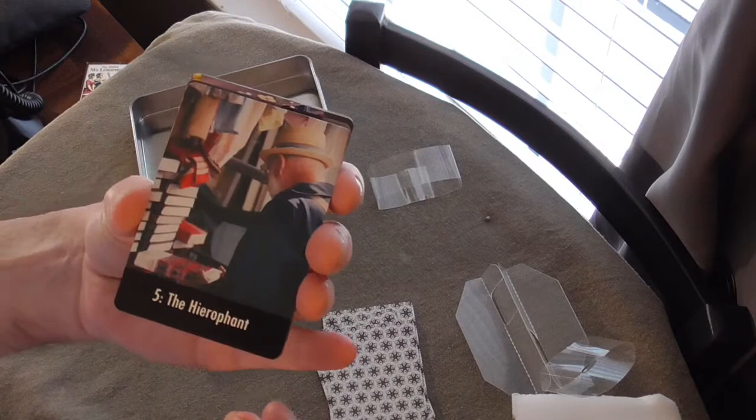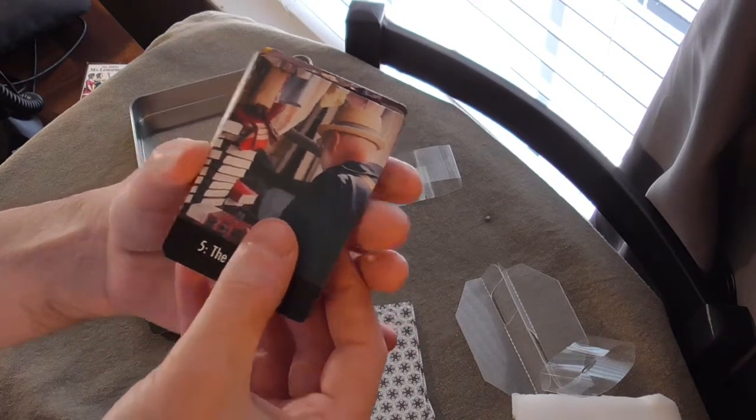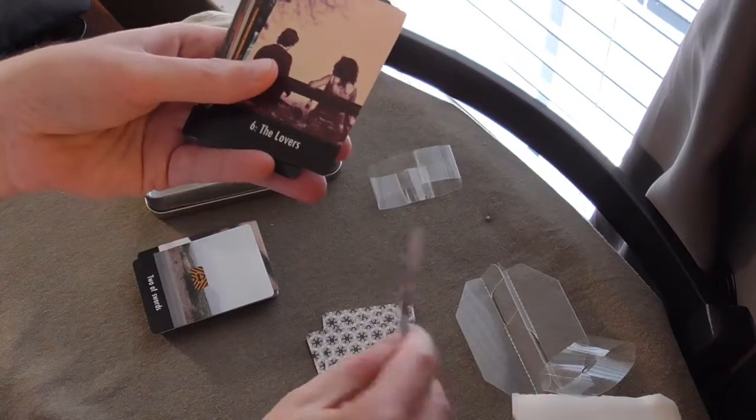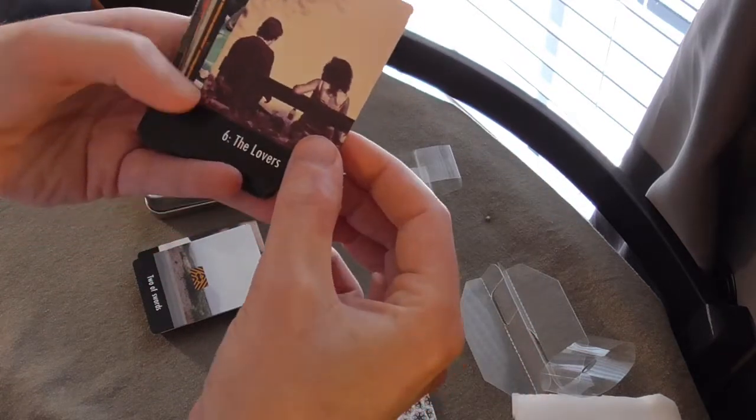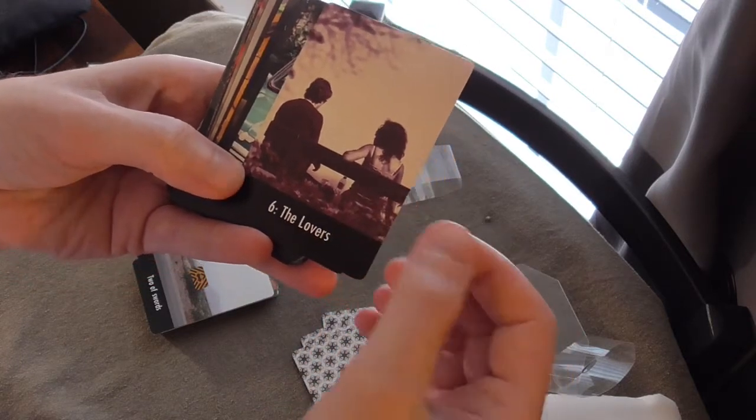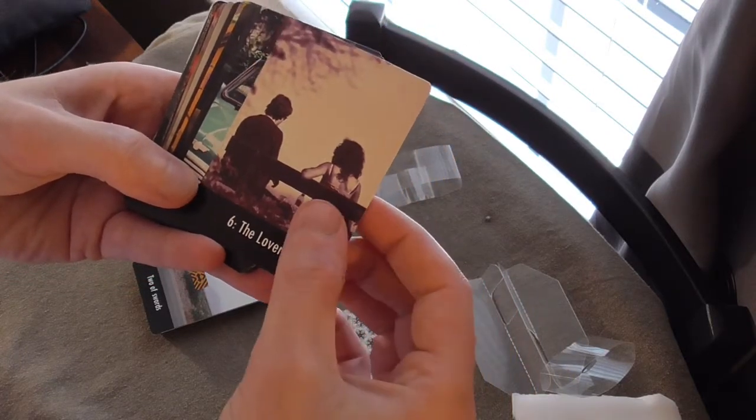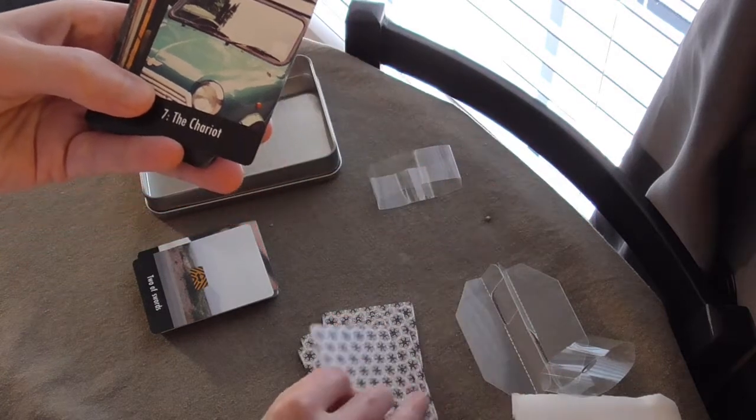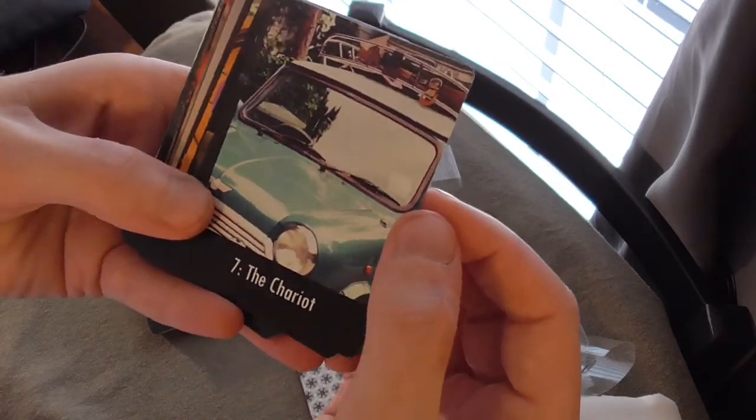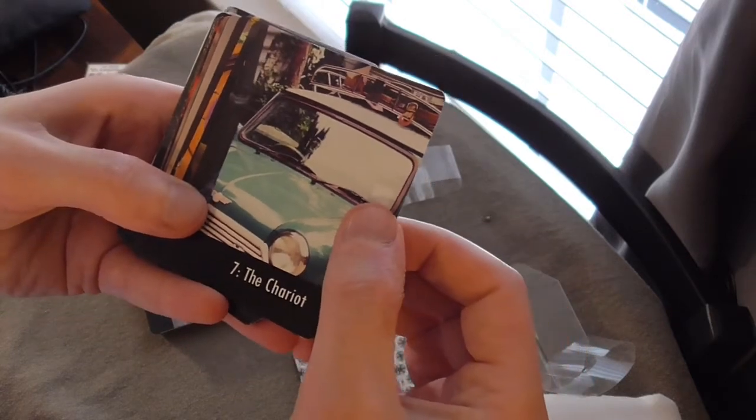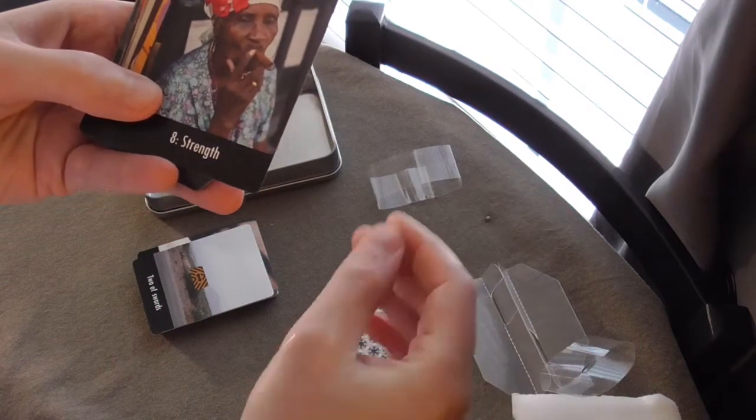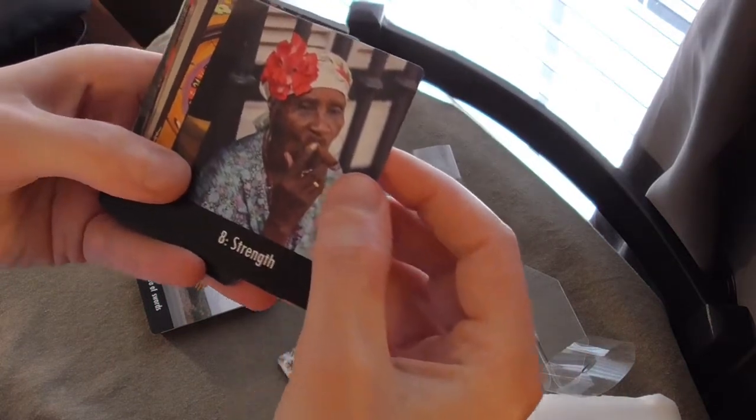There's one card in here that I'm probably going to change. There's lovers there. I had a few lovers that I ended up going with this one. It's my Chariot. I think the Chariot was my first one that I made. Here's my Strength card.